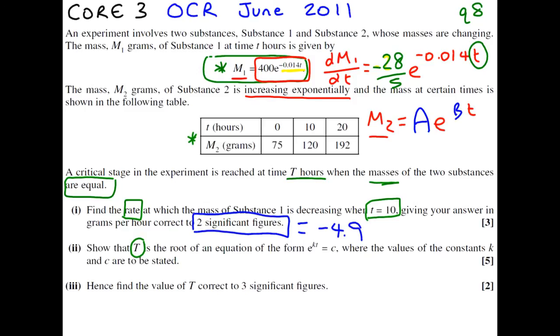This is called your initial condition here, that t equals 0 when the mass of the substance is 75. m2 is 75 when a times e to the b times 0, which is 0. e to the 0 is 1, so a is 75.